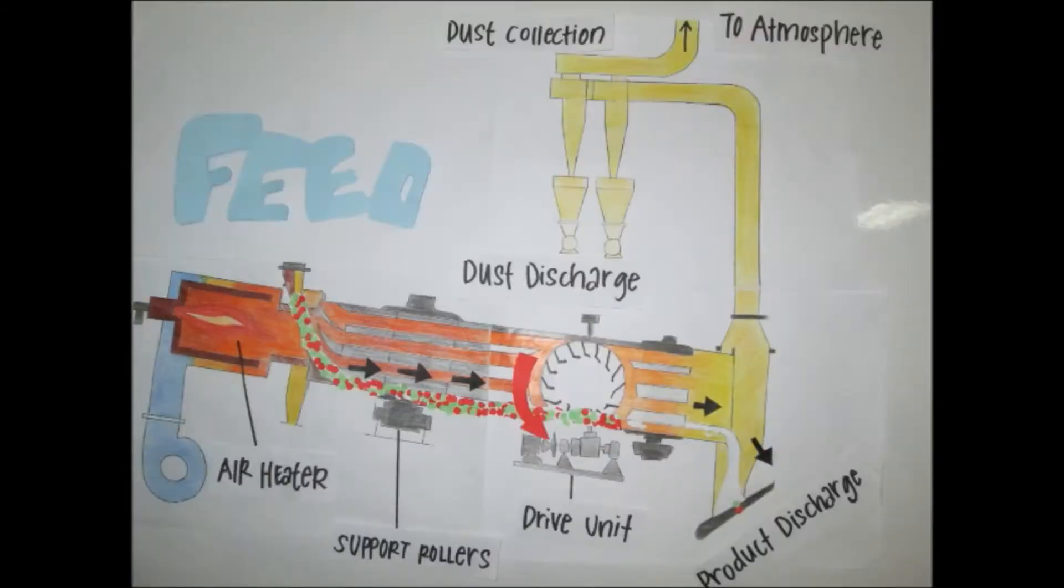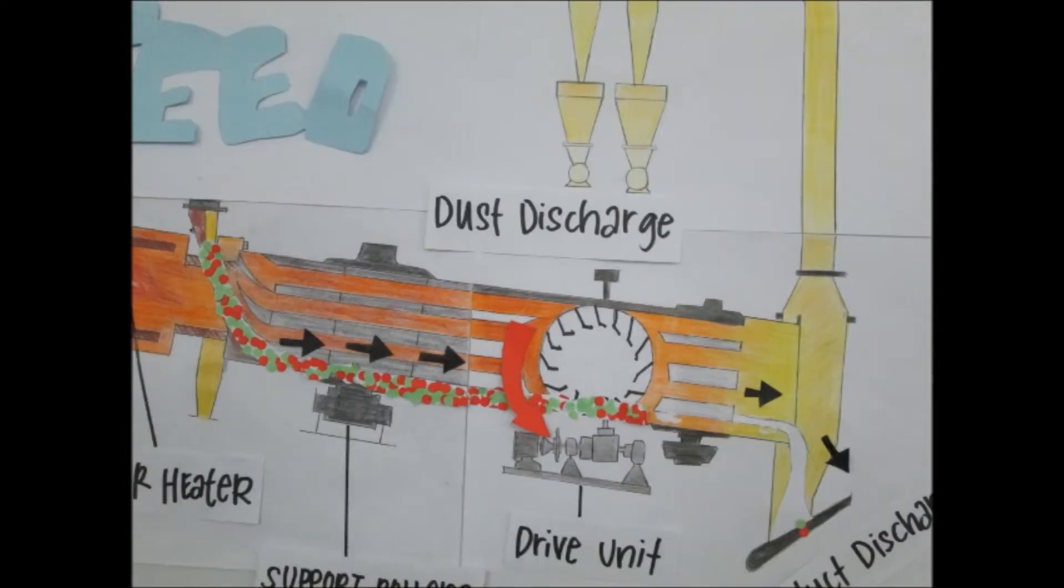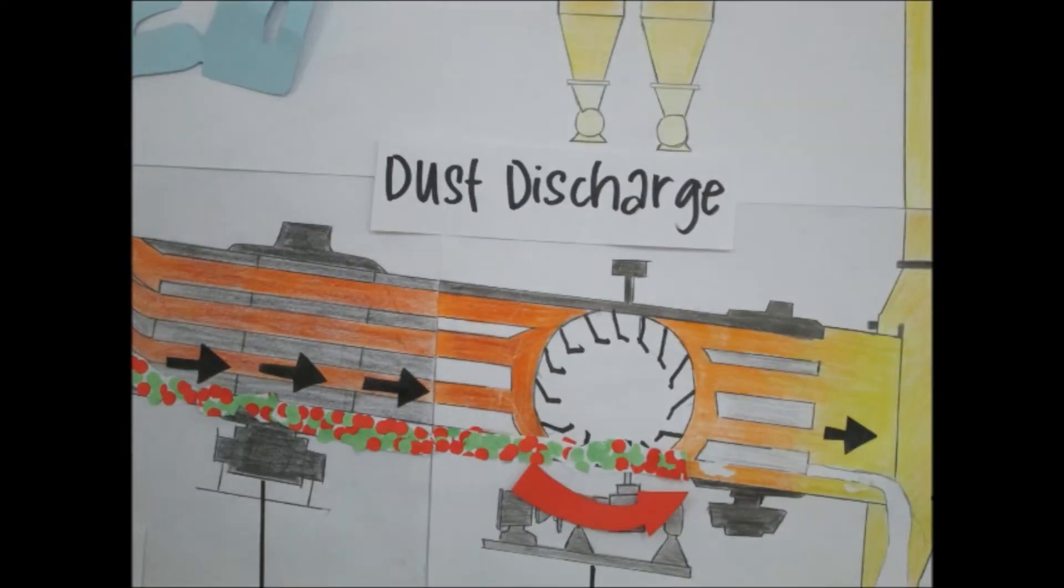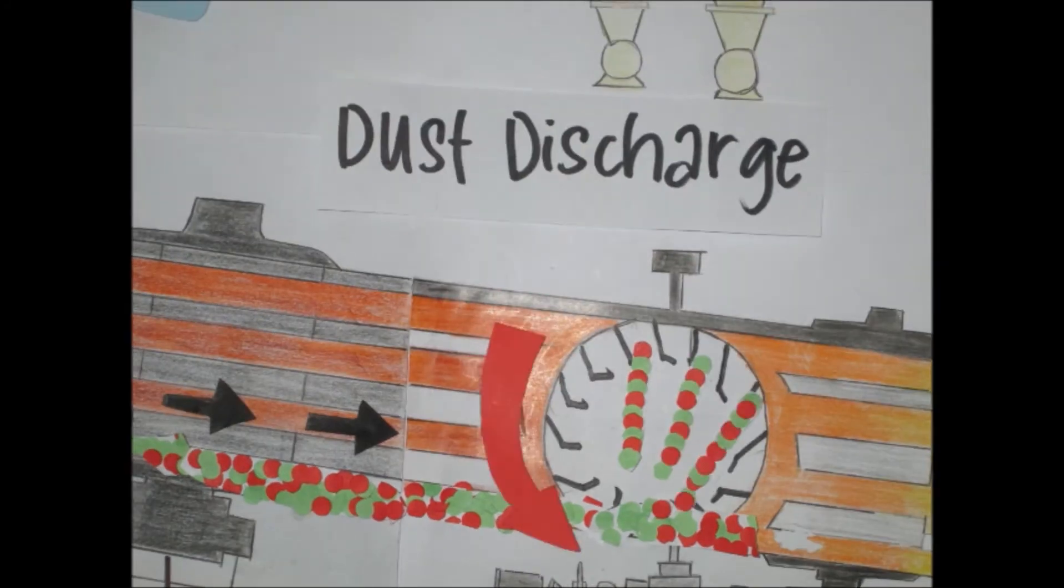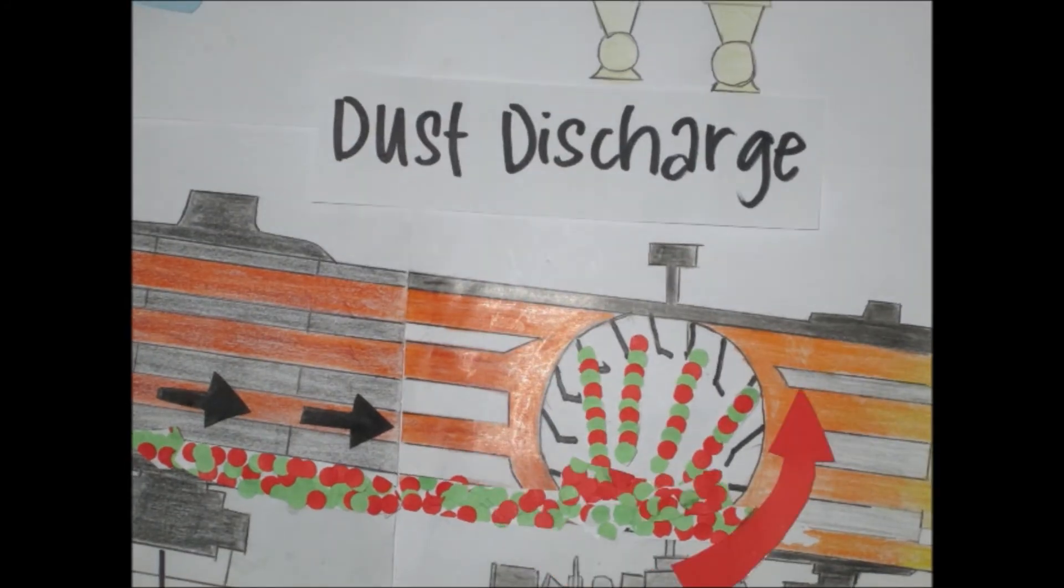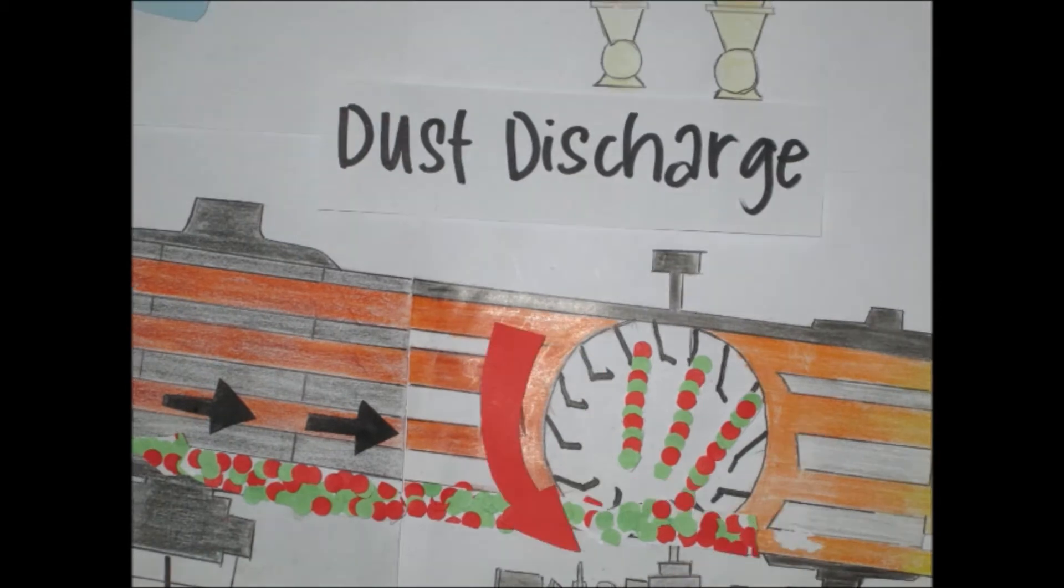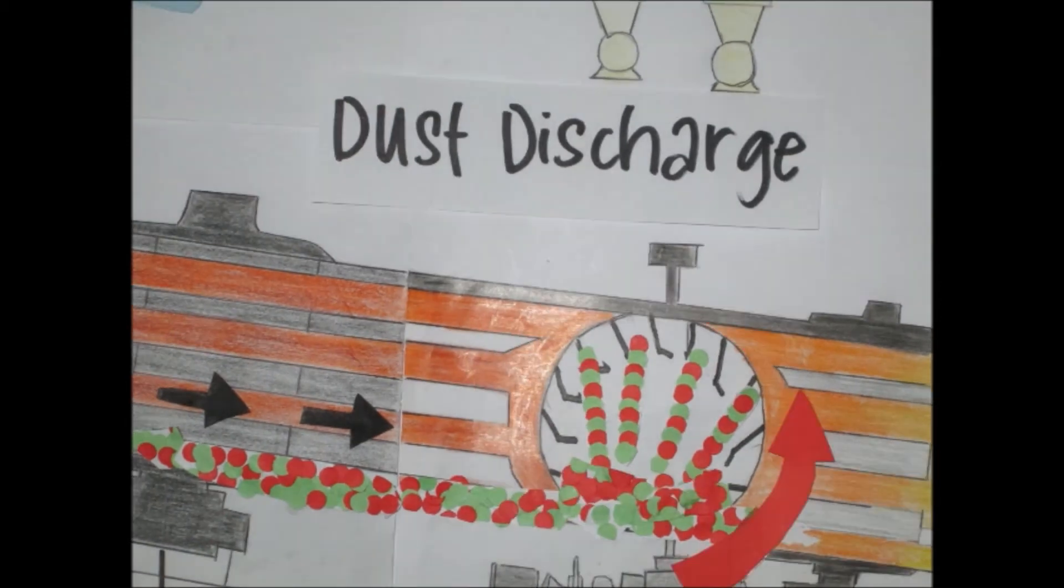The wet material is in contact with the gas at its highest temperature, which rapidly evaporates surface moisture. The initial heat transfer rate is high, causing an immediate and considerable drop in gas temperature, which prevents overheating of the material in the dryer shell.